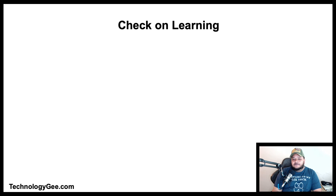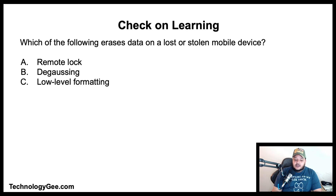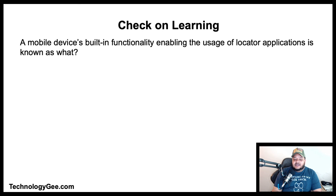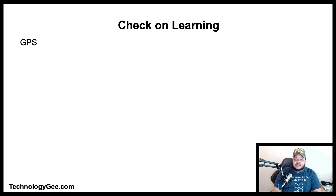Quiz time: Which of the following erases data on a lost or stolen mobile device — remote lock, degaussing, low-level formatting, or remote wipe? The correct answer is remote wipe. Next question: A mobile device's built-in functionality enabling the usage of locator applications is known as what — WPS, GSM, IMEI, or GPS? The correct answer is GPS; it needs to be on and working to use an app like Find My iPhone.